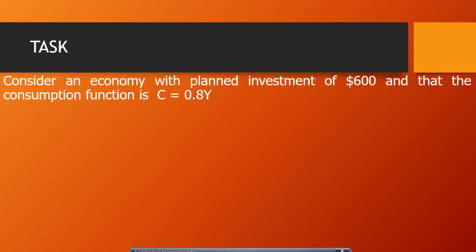The MPC is the proportion of the change in income that is dedicated to consumption. For example, if income increases by $1, then $0.80 will go to consumption. This consumption function tells us that when drawn on the Keynesian cross diagram, it will start from the origin — there is no vertical intercept.